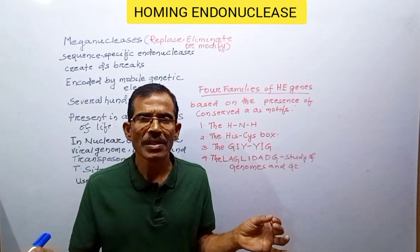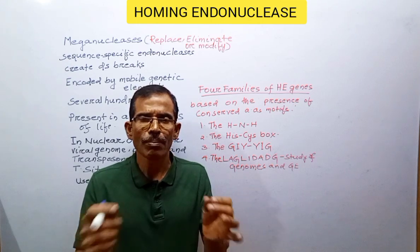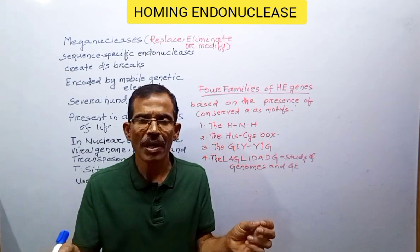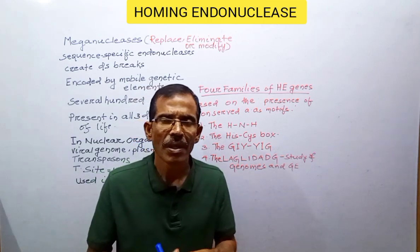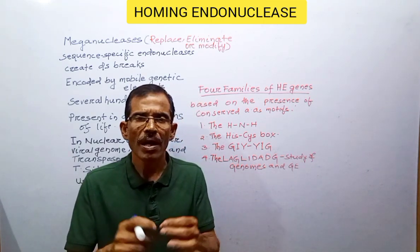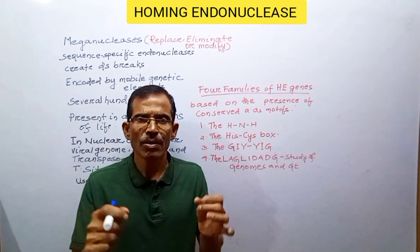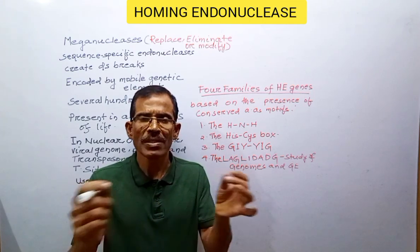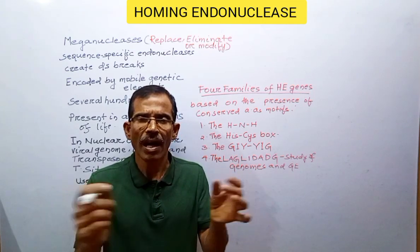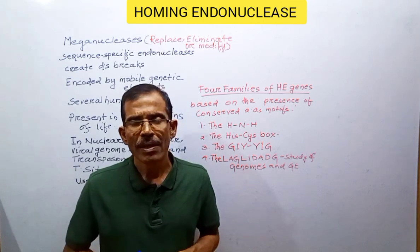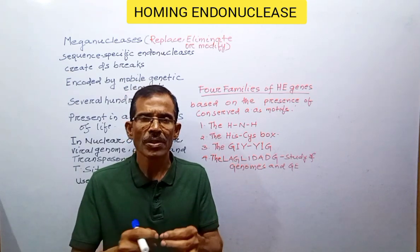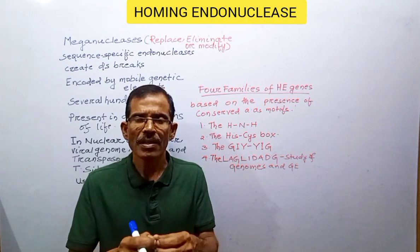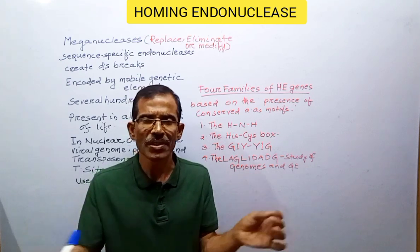Homing endonucleases are considered to be the most specific naturally occurring restriction enzymes. They are molecular DNA scissors that are used to replace, eliminate, or modify sequences in a highly targeted way. By changing their recognition sequence through protein engineering, their targeted sequence can also be changed.